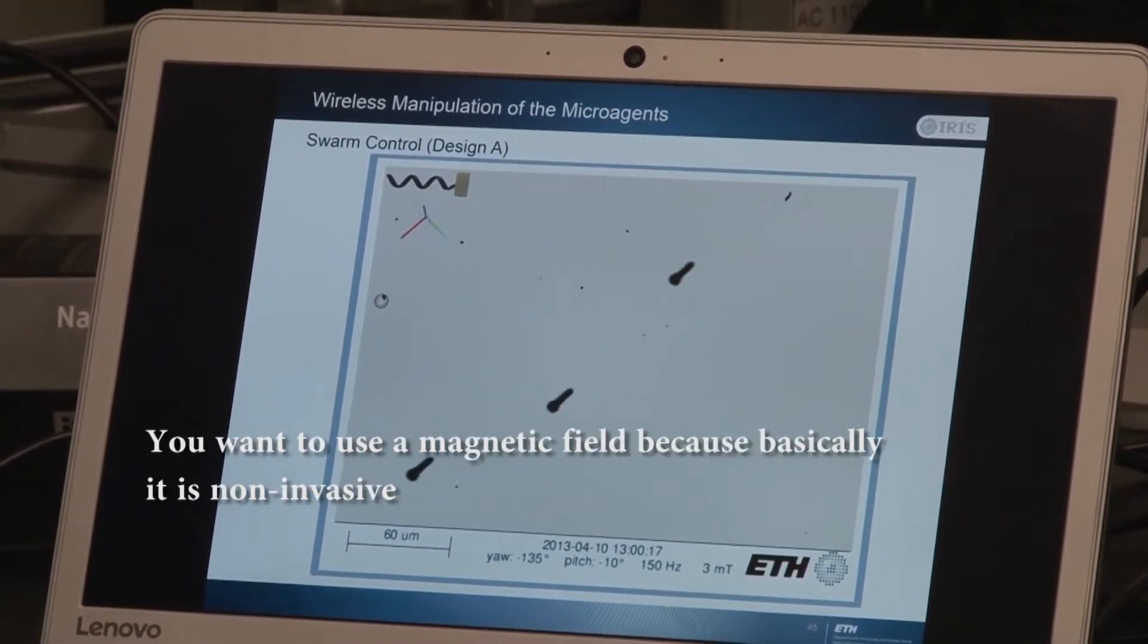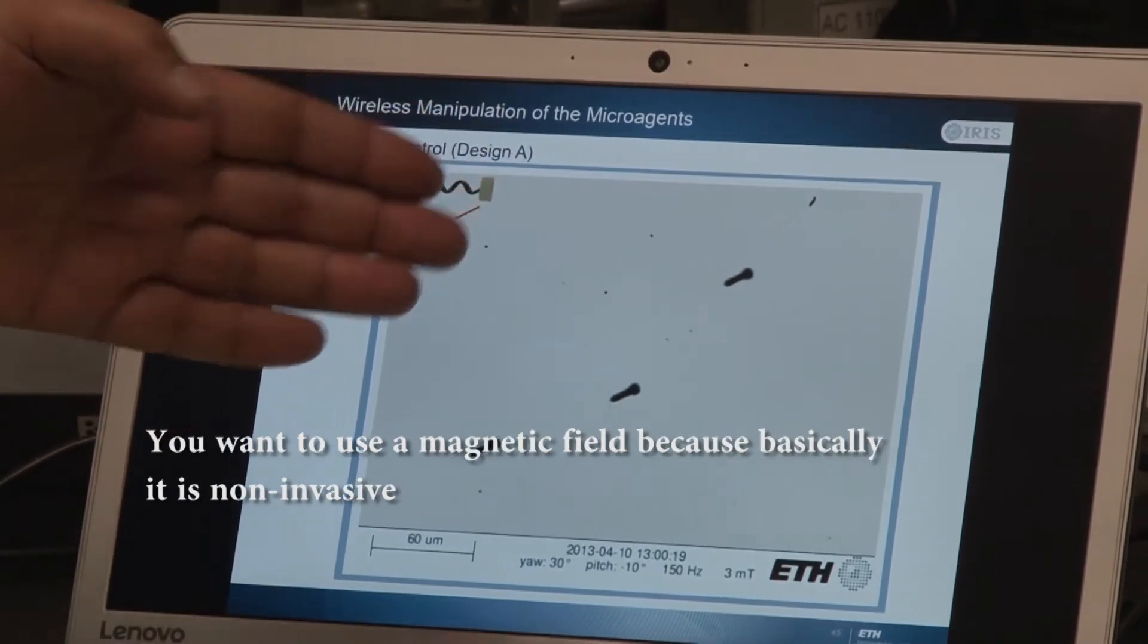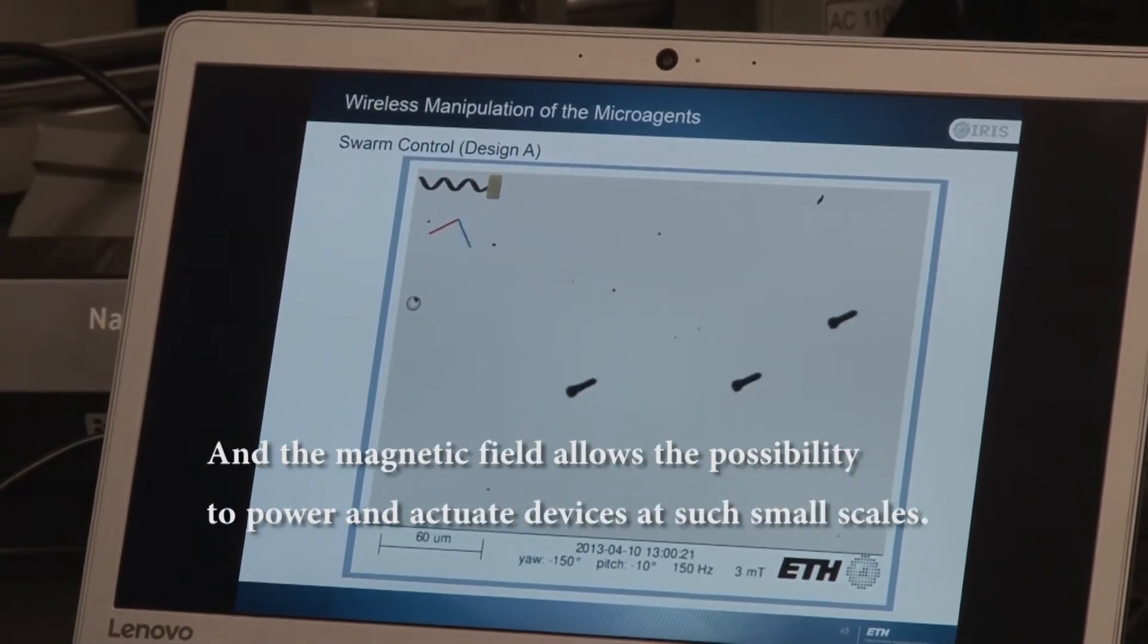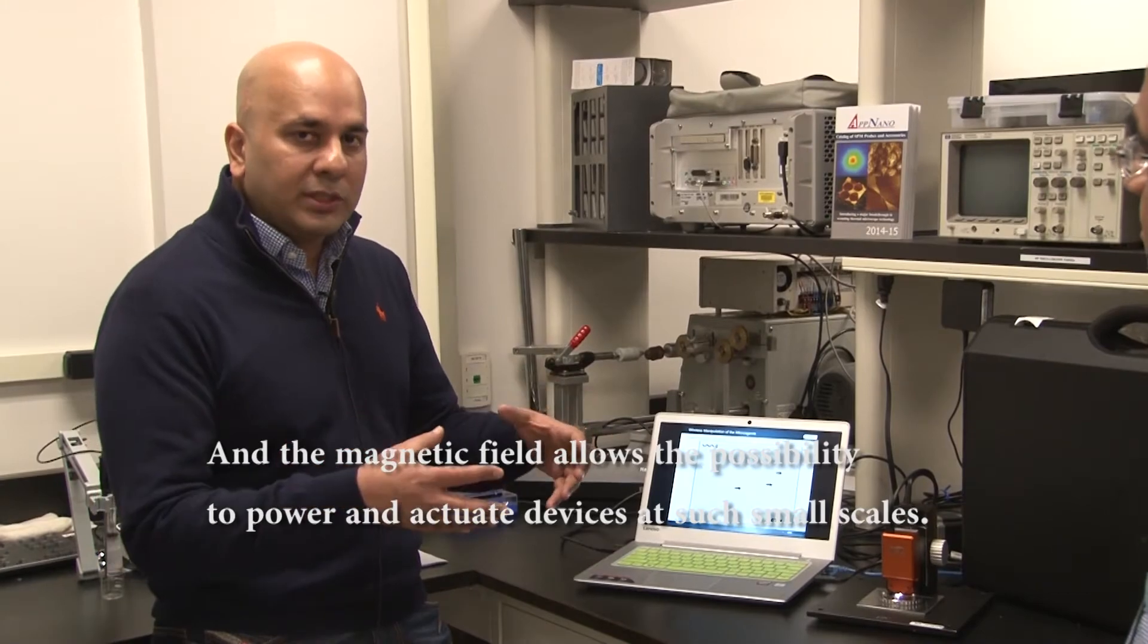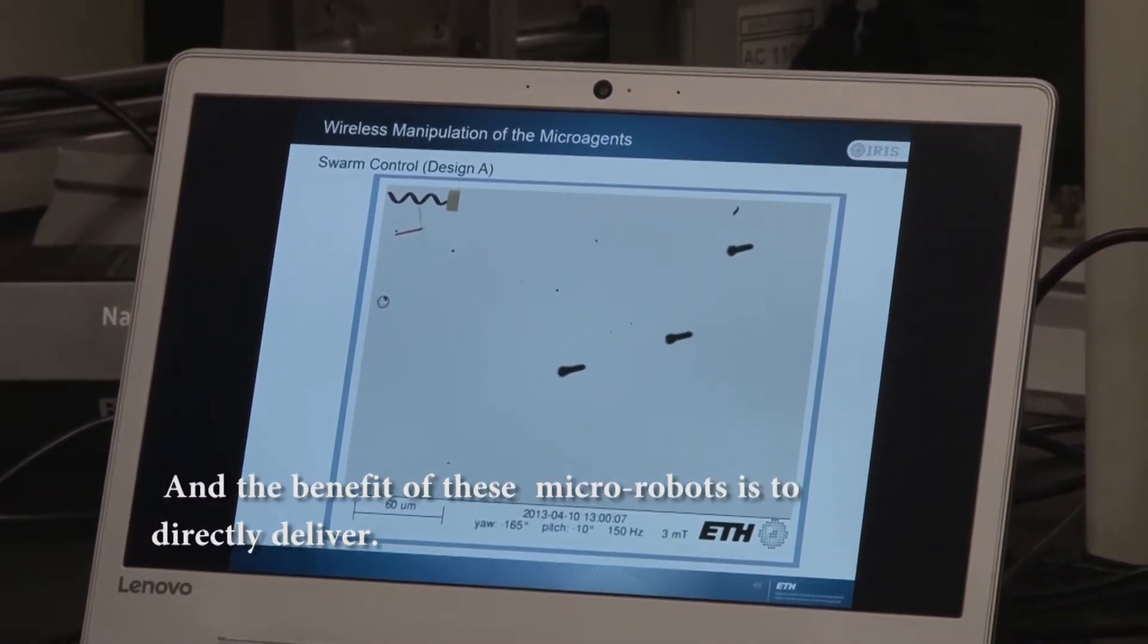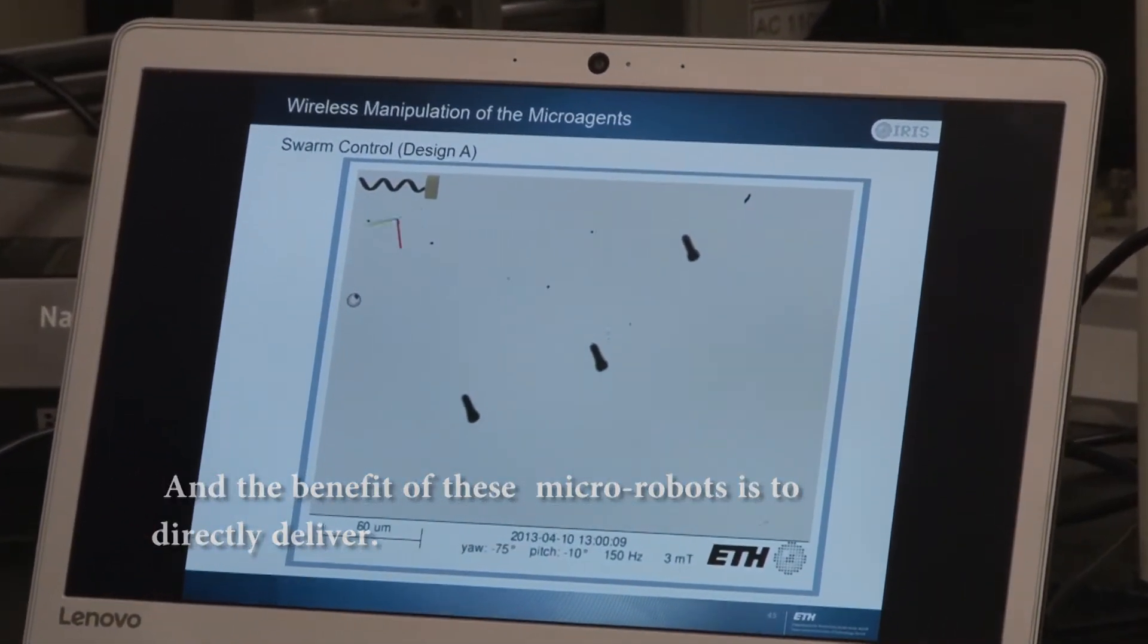We want to use magnetic fields because magnetic fields are non-invasive, and this is the best approach to power and actuate the devices at such small scales. The benefit of these micro robots is we want to use them for direct drug delivery approach.